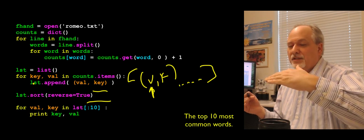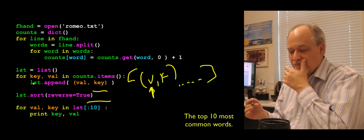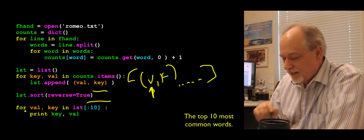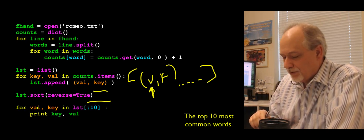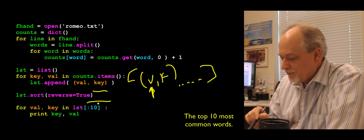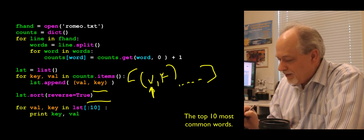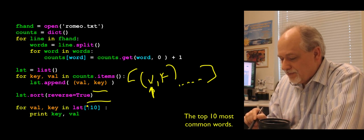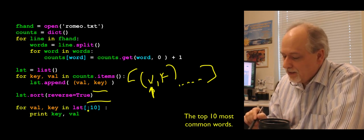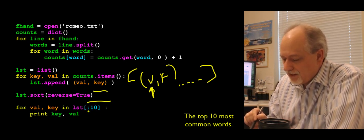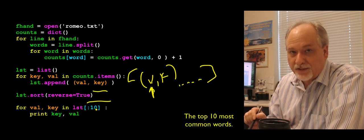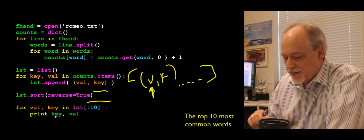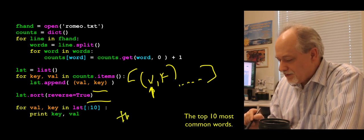So I made two lists, basically. I made the original one. Now I made this one just for the purpose of sorting. And now what I'm going to do to print out the top 10 is I am going to write a for loop, val key. Remember, this list, lst, is value key. And I'm going to say for val key in list, using list slicing, starting at 0, up to but not including 10, which is indeed the first 10 items. Now I'm going to print out key value.